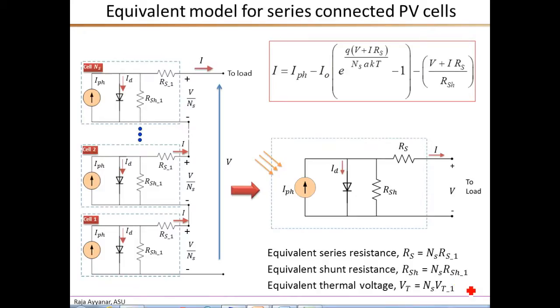Now, once again to reemphasize, the expressions that we developed in this video directly give you the parameter values for the complete PV module. Now, if for some reason we need to obtain the individual cell parameters, maybe to study the partial shading within a given PV module, for example, in that case, we need to divide some of the values that we obtained by this NS to get the corresponding parameter values for a single PV cell.